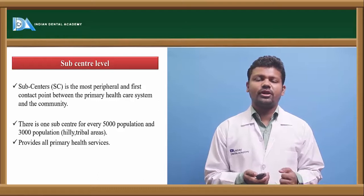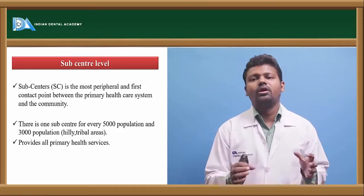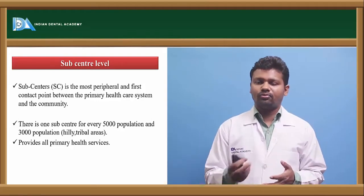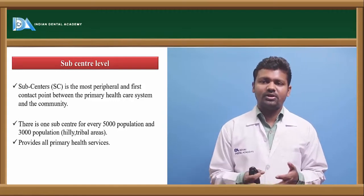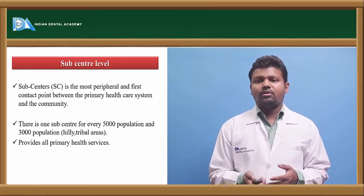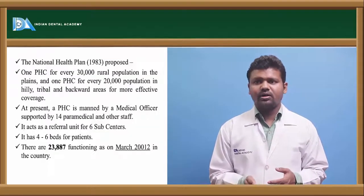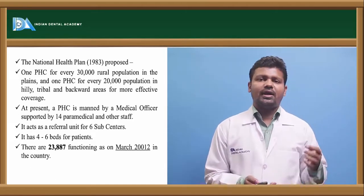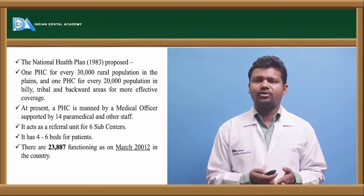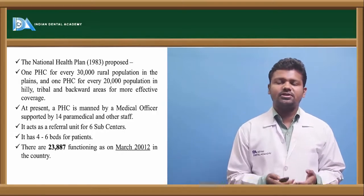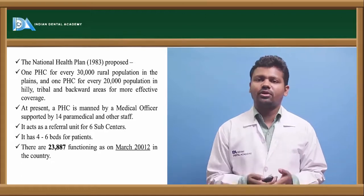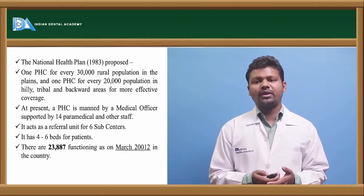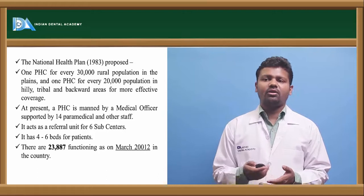Sub-centers are the peripheral and first contact points between the community and the health system. The National Plan of 1983 proposed one PHC for every 30,000 rural population and 20,000 for hilly or backward areas for more effective coverage. At present, each PHC has a medical officer, a dental officer, and is supported by 14 or 15 paramedical staff. There are 4 to 6 beds. There were a total of 28,887 functioning PHCs as of March 2012.